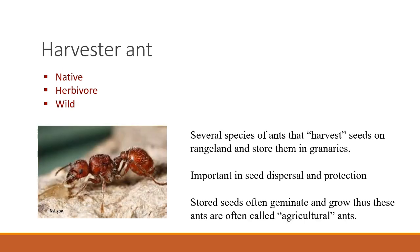In the really dry areas of rangelands, you'll see harvester ants. They get all the moisture they need from the seeds they eat. They're native, herbivores, and wild. They're called harvester ants because they harvest seeds and put them underground in little granaries — packing seeds into small cavities in their underground homes. That makes them important for seed dispersal and in some cases seed protection, as they eat mostly forbs. The stored seeds often germinate and grow, so they're sometimes called agricultural ants.